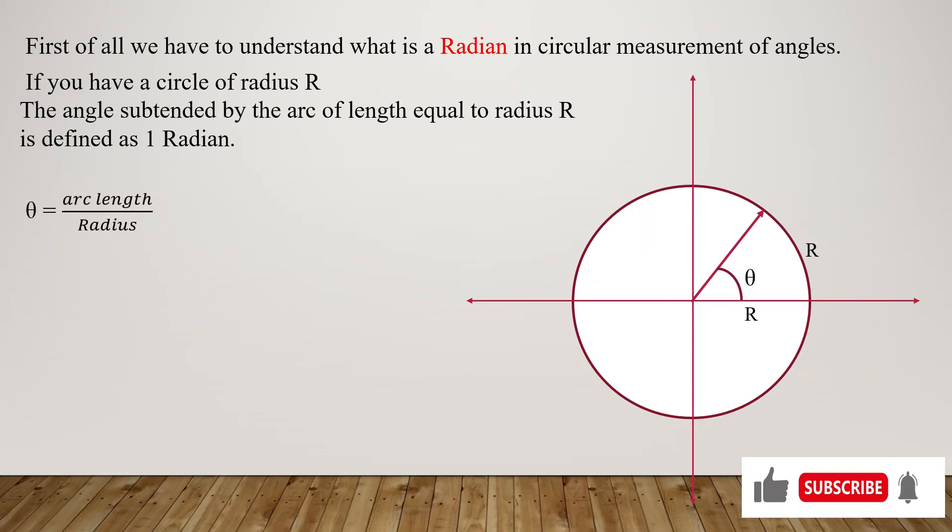So we can write θ as arc length by radius. We have arc length as R and radius as R, so this gives us one radian. This question requires the basic knowledge of radian.